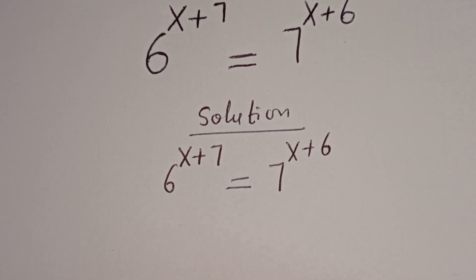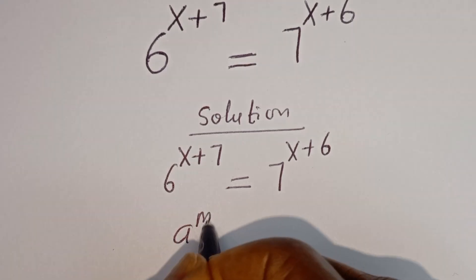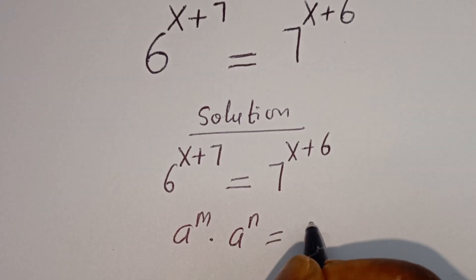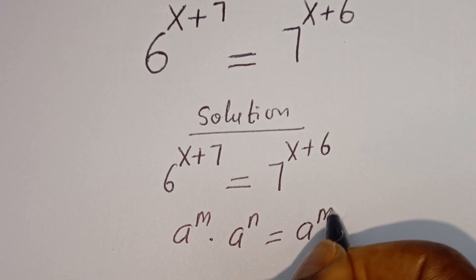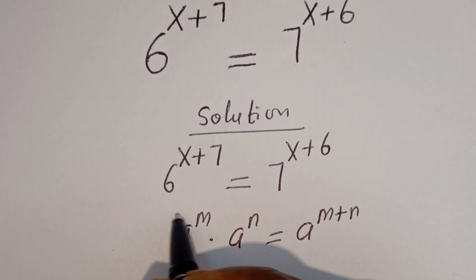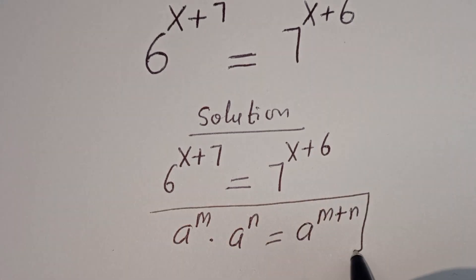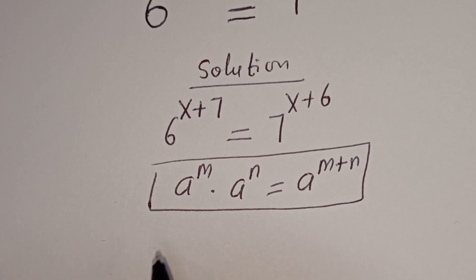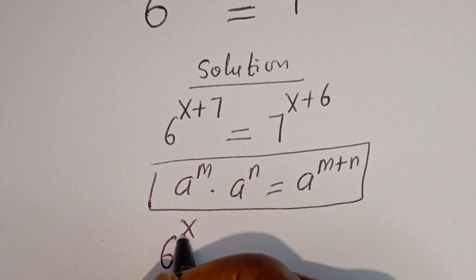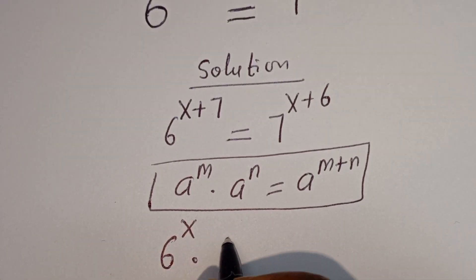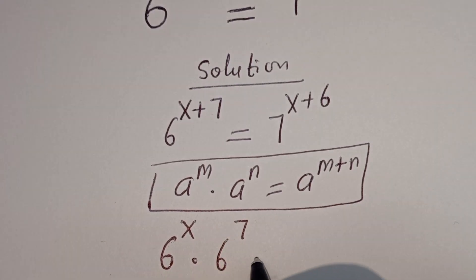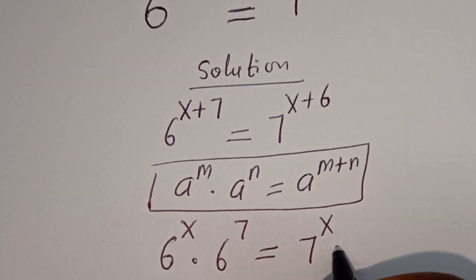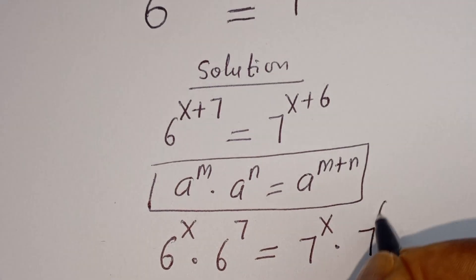Take note of this: if you have a to the power of m multiplied by a to the power of n, this is equal to a to the power of m plus n. Then this equation can be written as 6 to the power of x multiplied by 6 to the power of 7 is equal to 7 to the power of x multiplied by 7 to the power of 6.